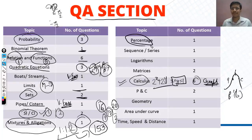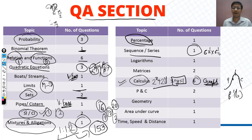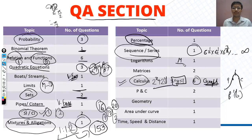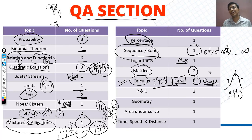Percentage had one question. Sequence and series also appeared — the sequence involved terms like 1.5x, 2.5x, and expressions like 6 to the power half and 6 to the power 3/8, up to infinity. Logarithm was a good question — I would place it in the medium-to-difficult category. Matrices also appeared at a difficult level.